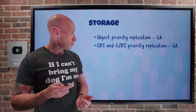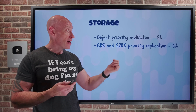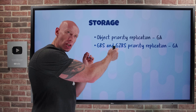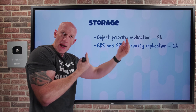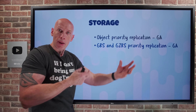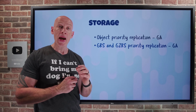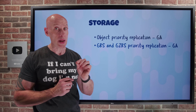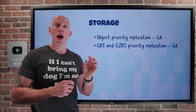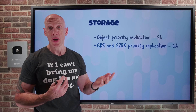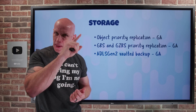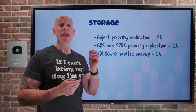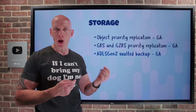GRS and GZRS now have the same priority replication option. The difference is GRS and GZRS use paired regions within the same storage account. You can now get the same 15-minute, 99% replication SLA for block blobs only — enable it at creation time or post-creation via data management redundancy settings with a geo priority replication option, and disable it the same way. There's a per-gigabyte priority cost.